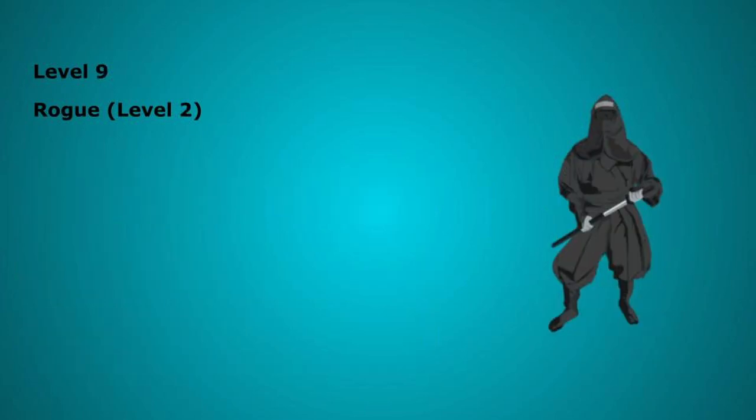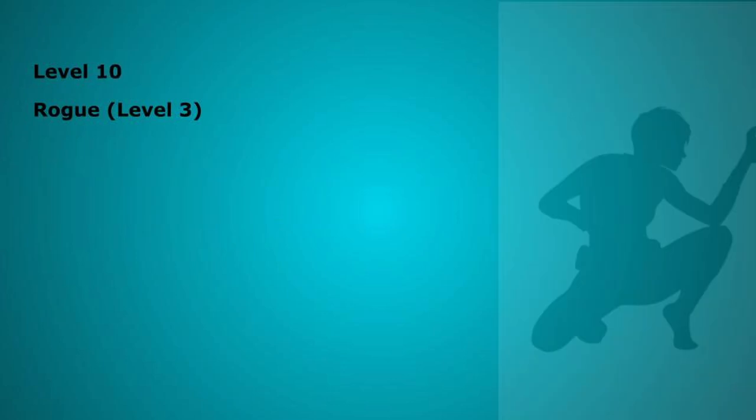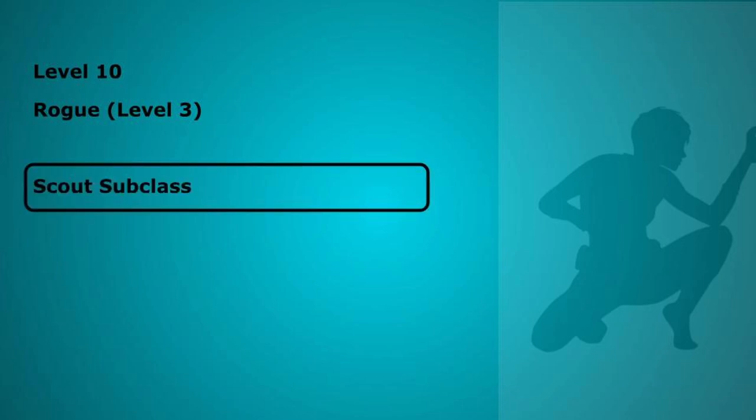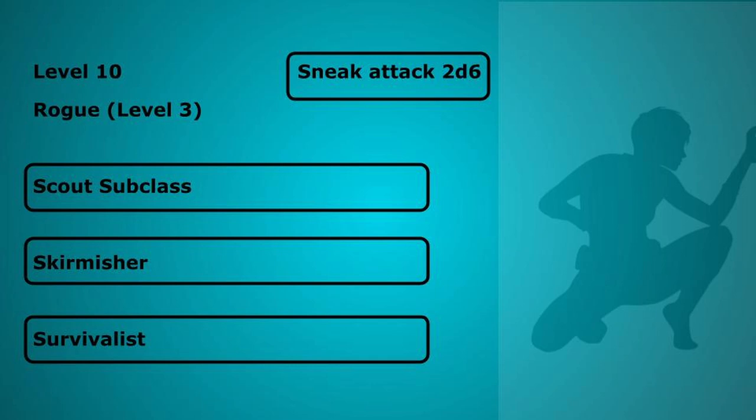Level 9 is again into Rogue. You gain the cunning action feature letting you dash, disengage or hide as a bonus action. Level 10 is your 3rd level in Rogue letting you pick an Arch type. Kratos was raised in Sparta and had to learn to scout for survival in childhood. We will pick the Scout subclass which gives us the Skirmisher feature. If an enemy finishes its turn within 5 feet of you, you can spend your reaction to move up to half of your movement speed away without provoking an opportunity attack. Level 3 Rogues also increase their sneak attack damage to 2d6.